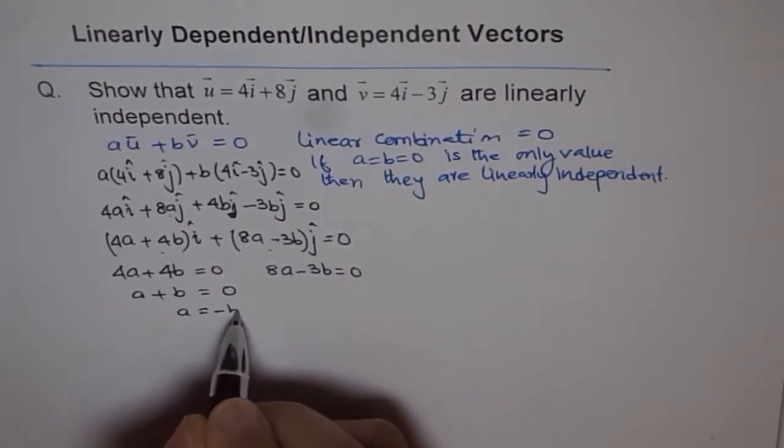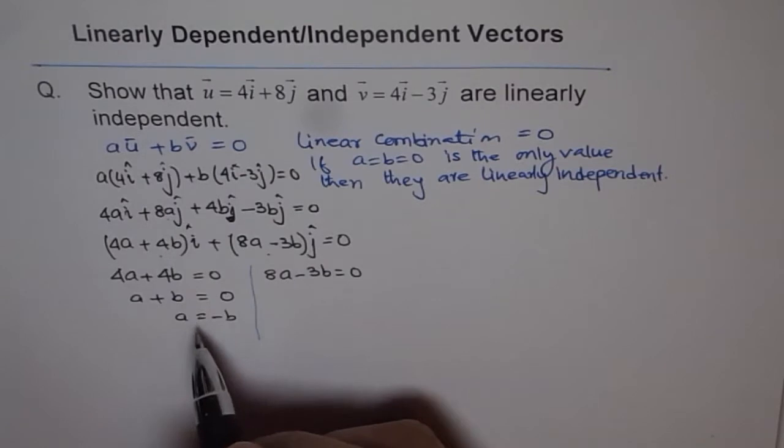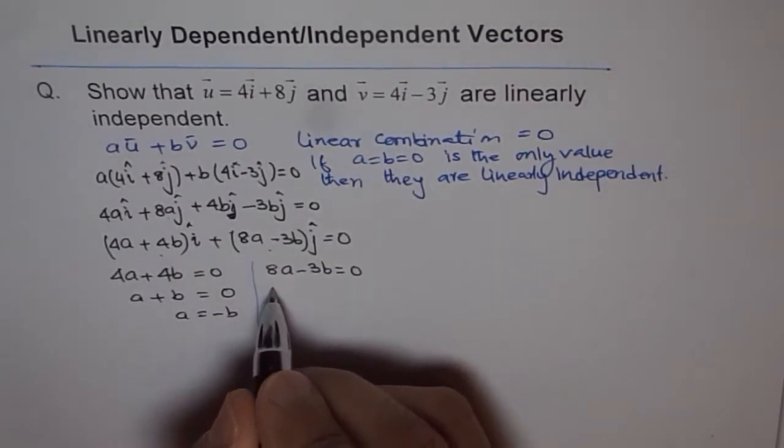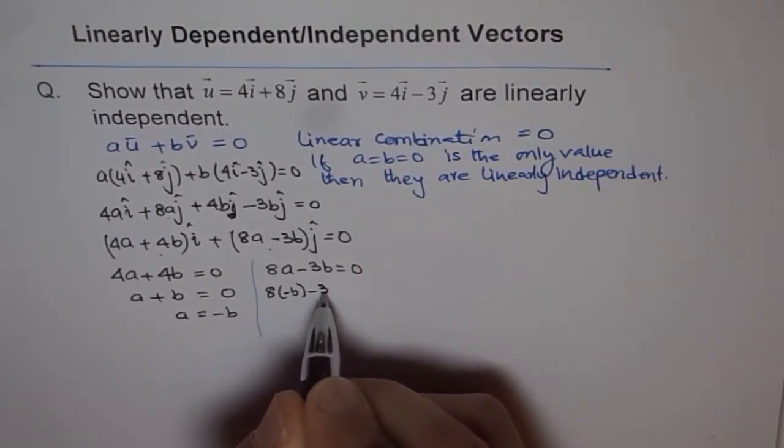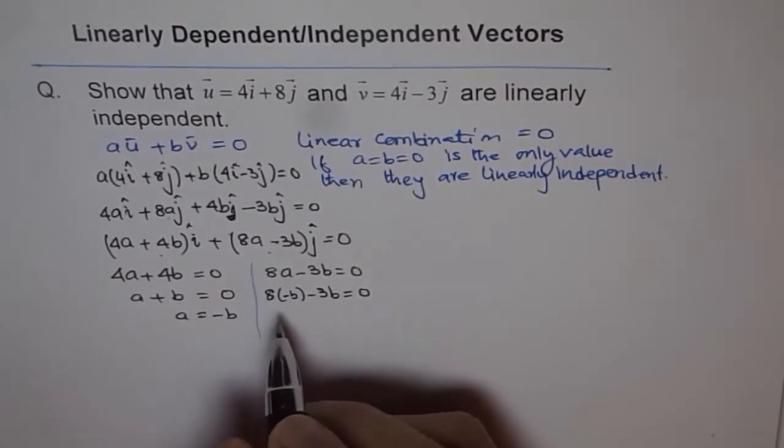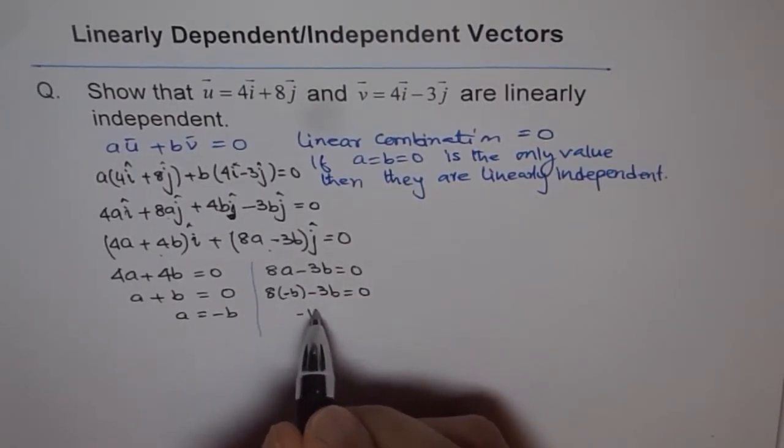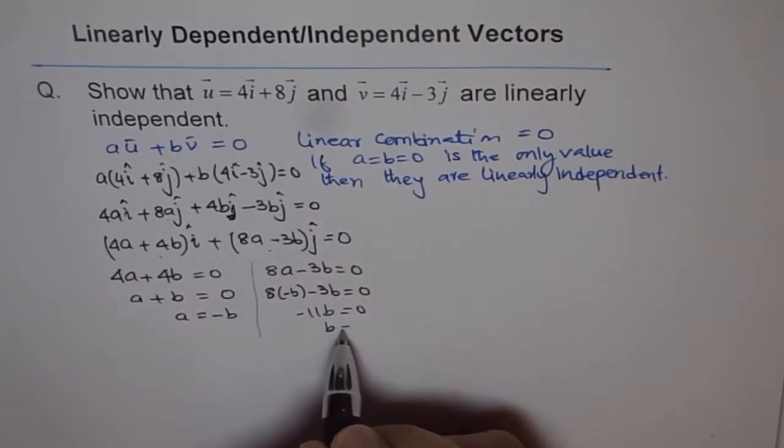And we can substitute this value of a equals minus b in the second equation and then find what b is. So if I write a equals minus b here, I get 8 times minus b minus 3b equals 0. Now that is minus 11b equals 0, and that is possible only when b equals 0.